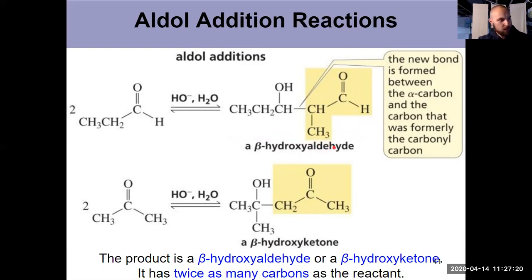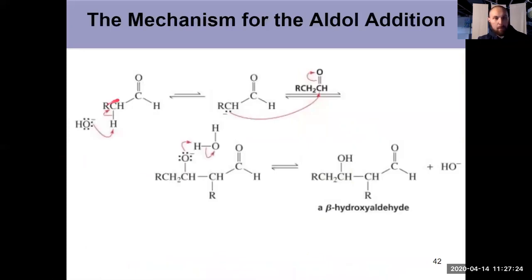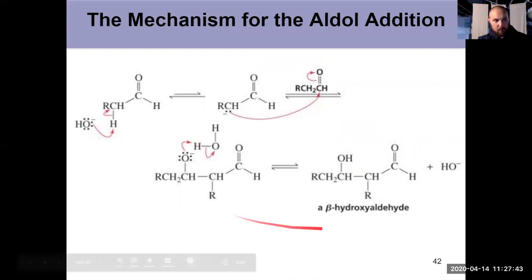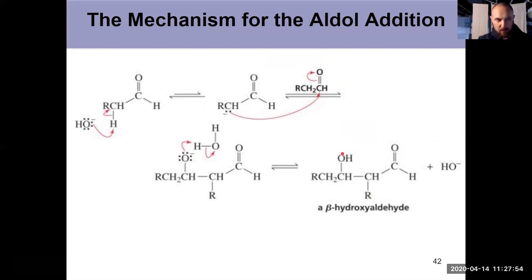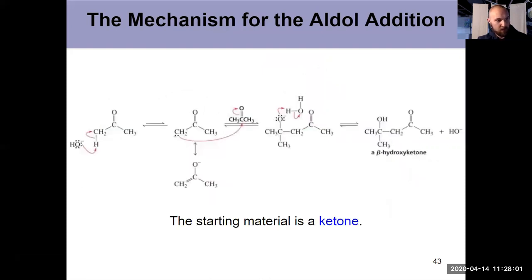For the mechanism: deprotonate the alpha position, giving a nucleophile that adds to the electrophilic carbonyl. After the nucleophile adds to the electrophile, pick up a proton, and you've produced a beta-hydroxy aldehyde — beta-hydroxy because there's a hydroxy group at the beta position. Beta-hydroxy aldehydes or beta-hydroxy ketones are the products of these aldol additions. Here we see the same exact mechanism with the resonance contributor shown — this produces a beta-hydroxy ketone because we started with two ketones. These are nucleophilic addition reactions.